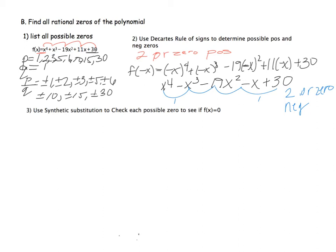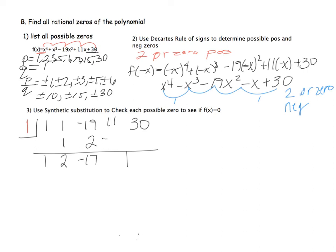We're going to check using synthetic substitution, starting with 1. I write the coefficients 1, 1, −19, 11, and 30. Bringing down the 1, then: 1×1=1, add to get 2, 2×1=2, add to get −17, multiply to get −17, add to get −6, multiply to get −6, add to get 24. The remainder is 24, so 1 is not a zero.